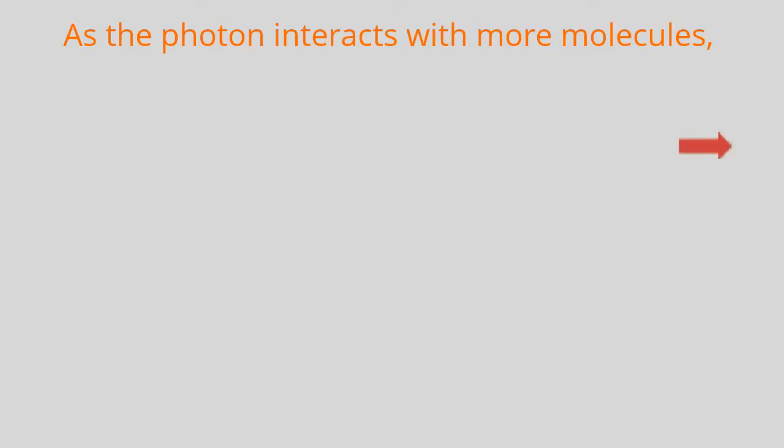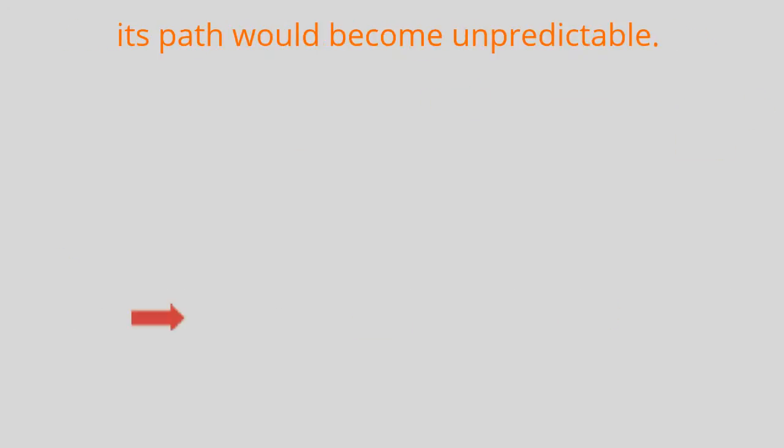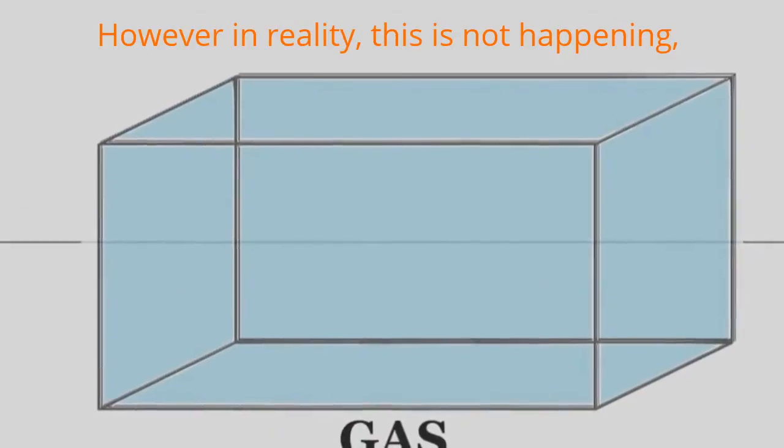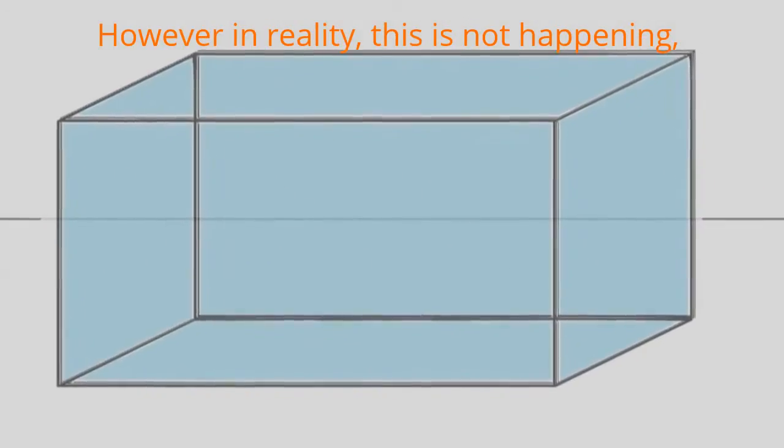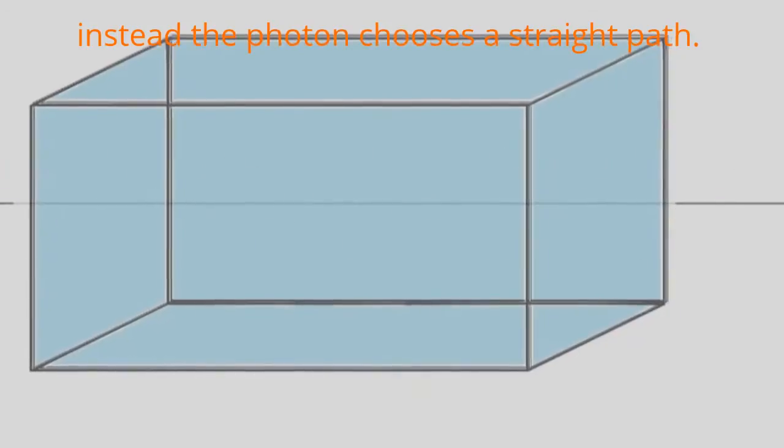As the photon interacts with more molecules, its path would become unpredictable. However in reality, this is not happening; instead the photon chooses a straight path.